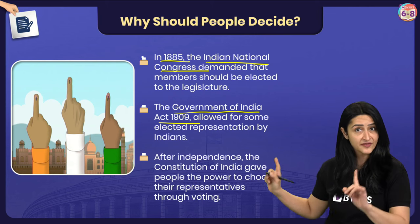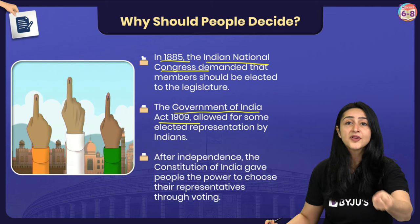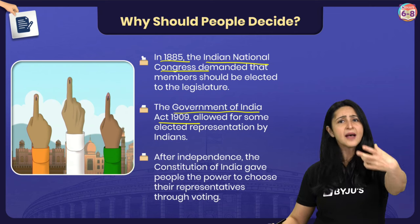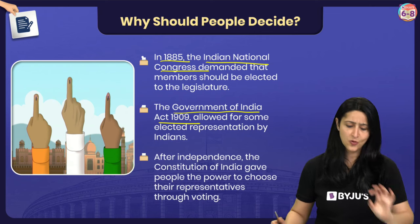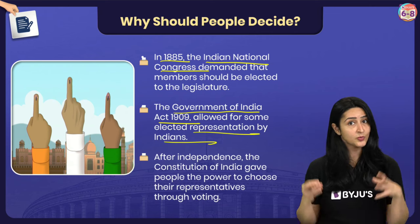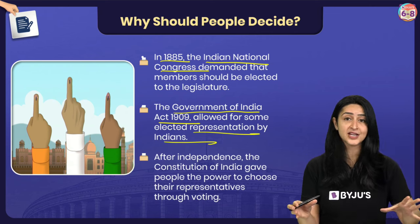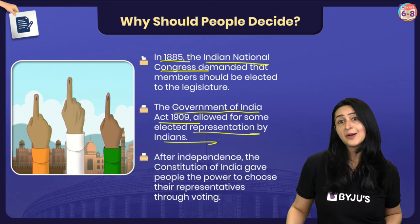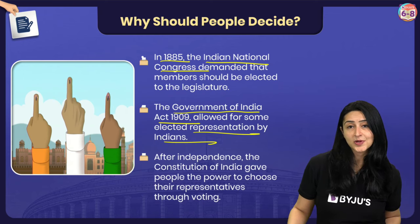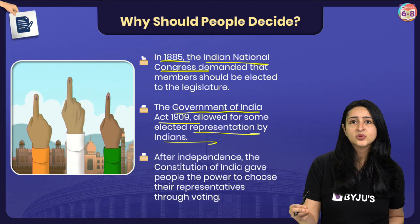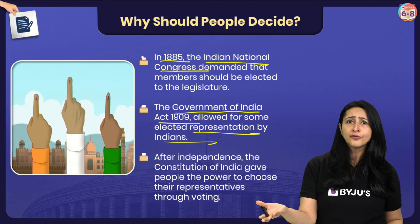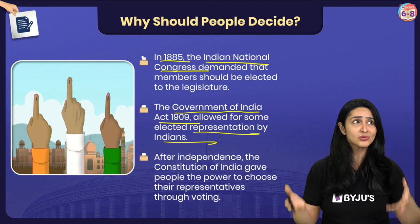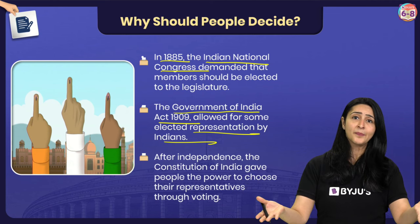This demand forced the British government to constitute the Government of India Act of 1909, which then allowed some members to be elected, giving us representation by Indian members. However, there was a catch — these elected members were not allowed to vote or participate in any sort of decision making. So this was not a great situation at all.